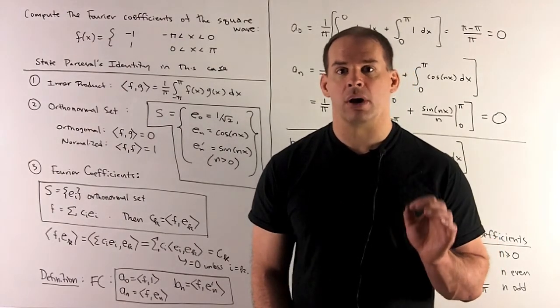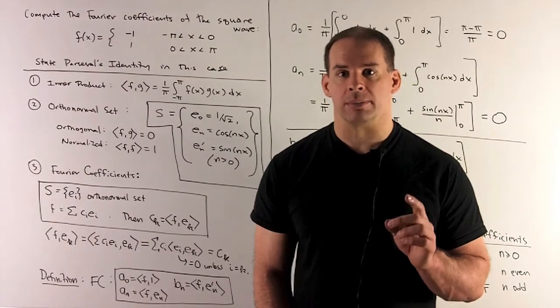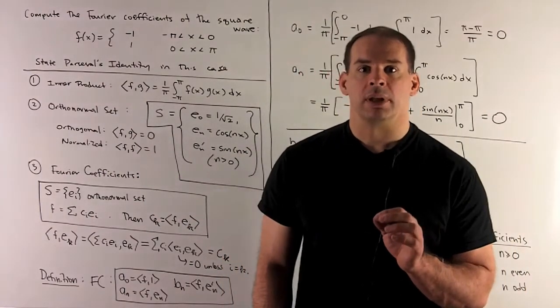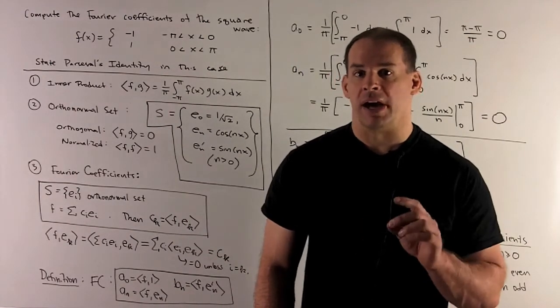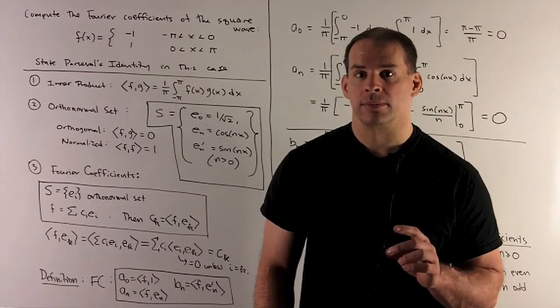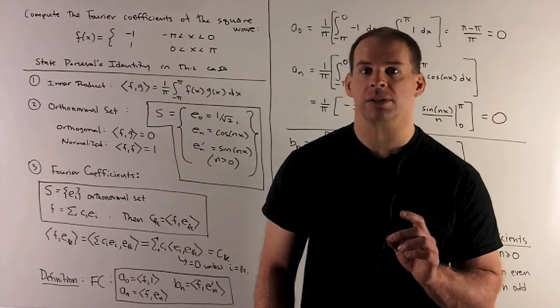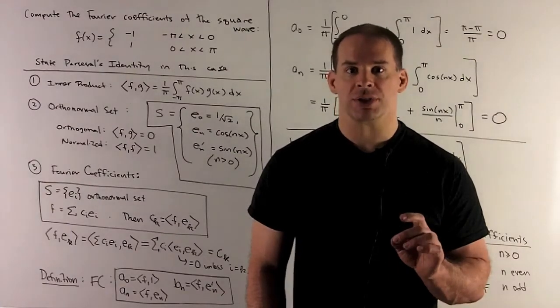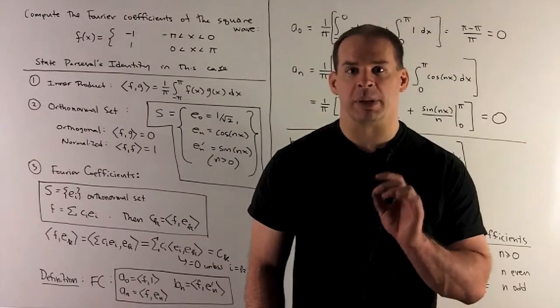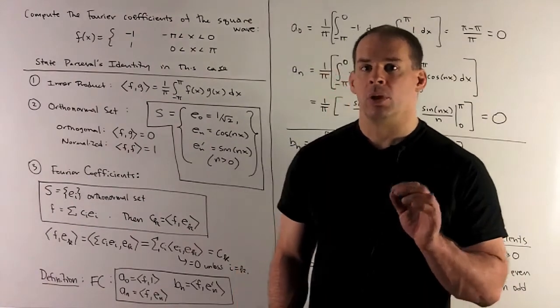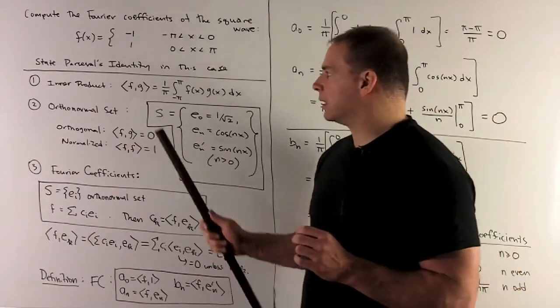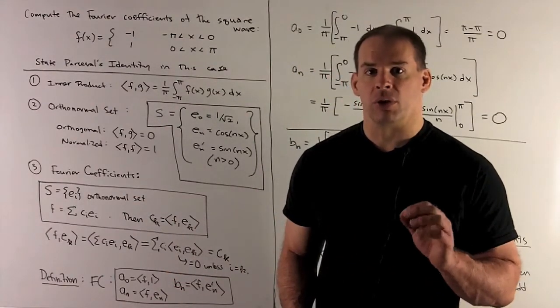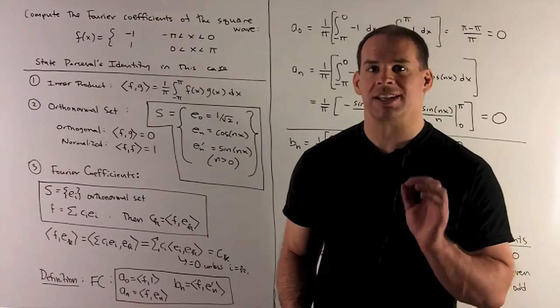To find Fourier coefficients, we're going to need a few items. First item, an inner product. In linear algebra, we have inner products for finite dimensional vector spaces. In multivariable calculus, we have the dot product. Here we're going to want a notion of inner product for functions. We can think of functions as being a type of vector. We'll define our inner product as the inner product of f and g is going to be one over pi, definite integral from minus pi to pi of f of x, g of x, dx.